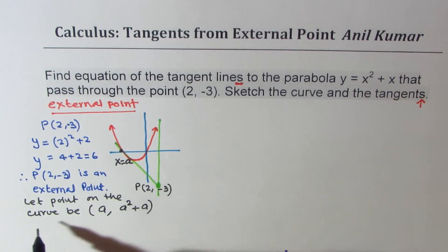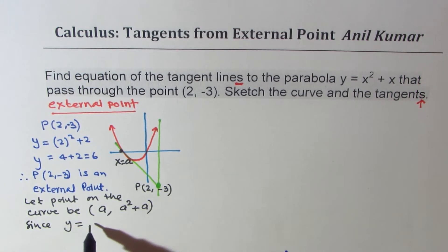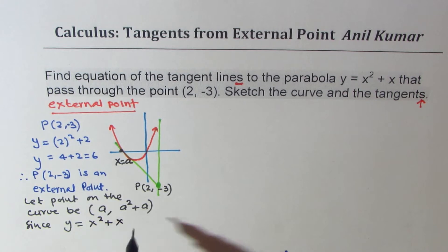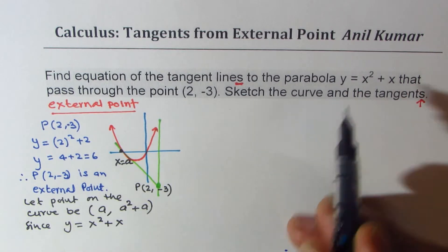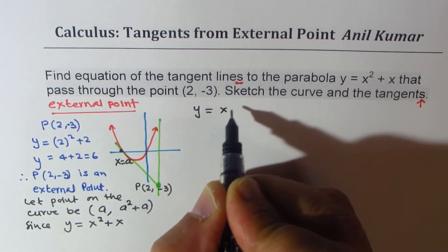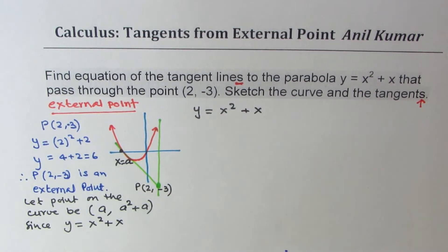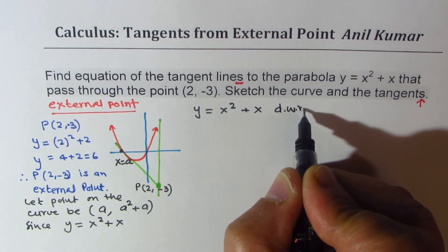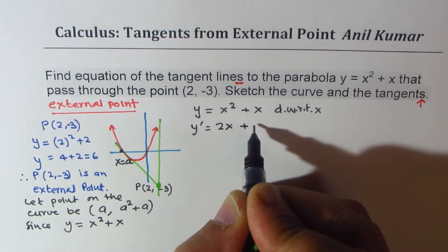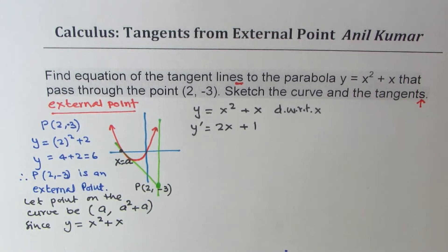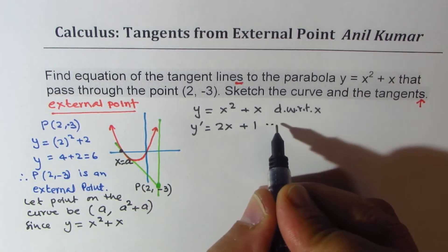Since the equation is y equals x squared plus x, we can find the slope by finding the derivative. If I differentiate with respect to x, I get dy/dx — let me write y′ equals 2x plus 1. That is the derivative. We will call this Equation 1.